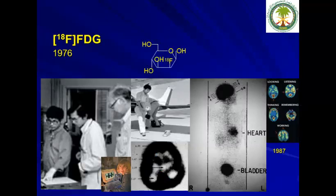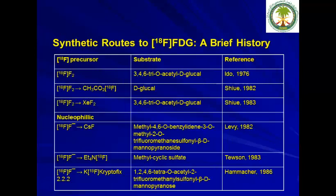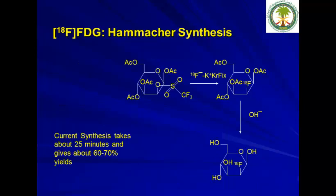FDG was developed in 1976 by Professor Wolf and his group at Brookhaven National Lab. You can see the first images done using a conventional gamma camera, and also the first images using a regular PET scanner. Since 1976, it was developed all the way to the Hamacher method, developed in 1986. Using this method, we can produce FDG in 25 minutes — it was called the cup of coffee synthesis procedure — using precursors including triflate, reacted with F-18 to yield FDG.